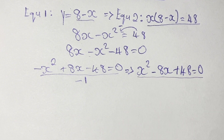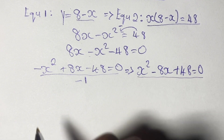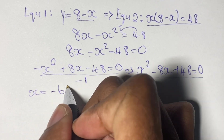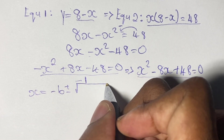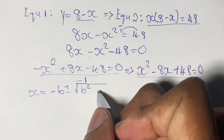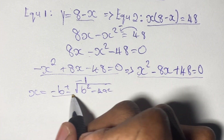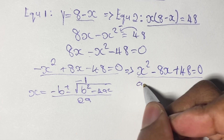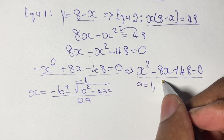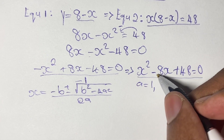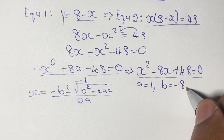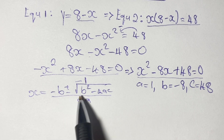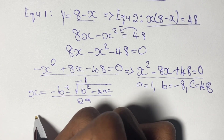This is our quadratic equation, and we are going to solve it using the general quadratic formula: x is equal to negative b plus or minus the square root of b squared minus 4ac, all over 2a. In this case, a is equal to 1, b is equal to negative 8, and c is equal to 48. So all we have to do is plug these values into our quadratic formula.